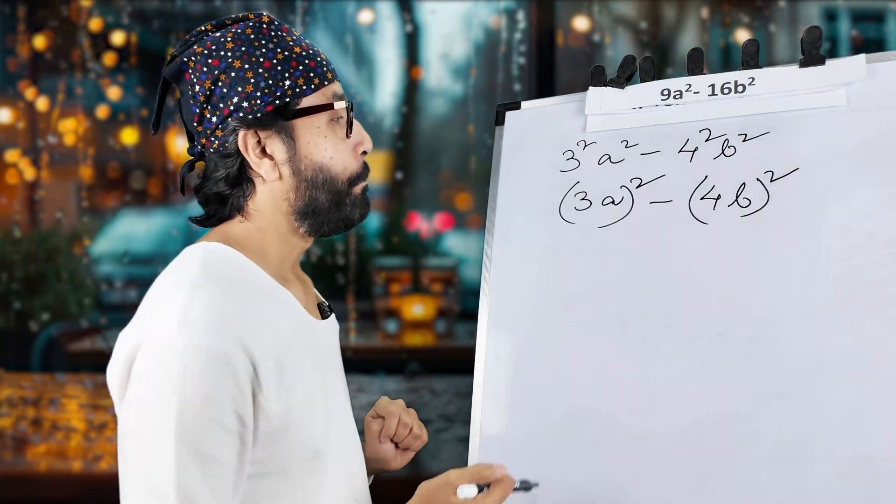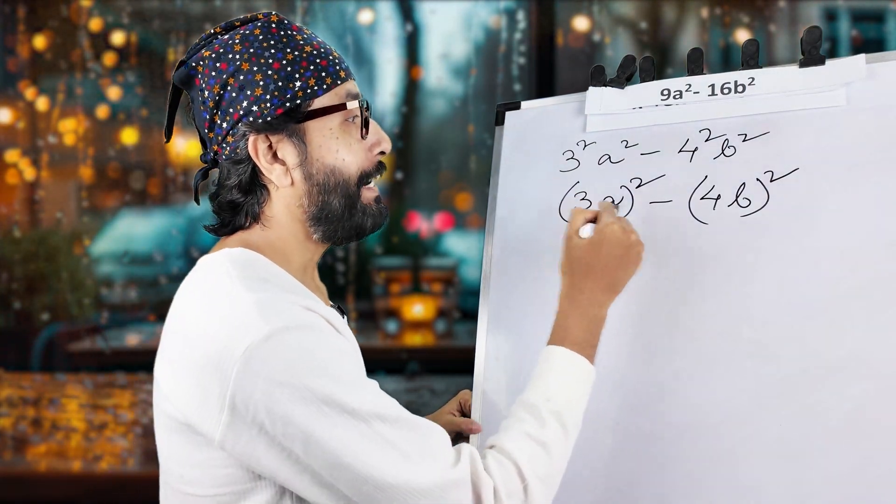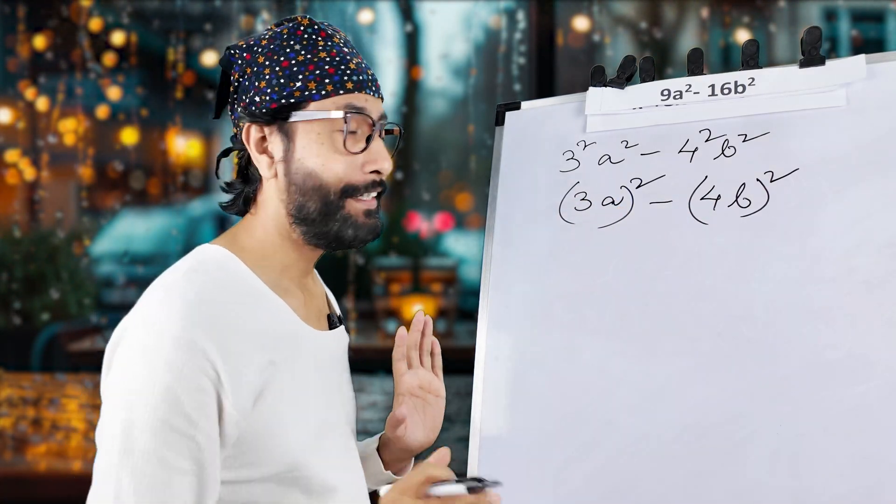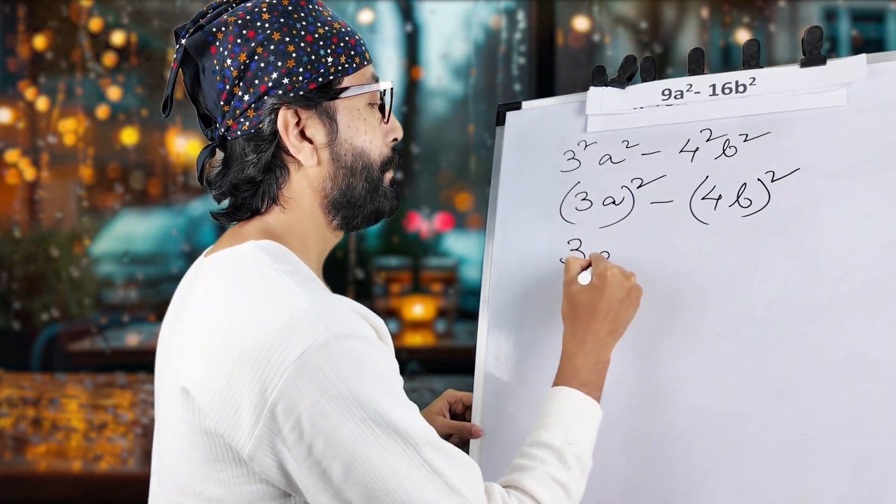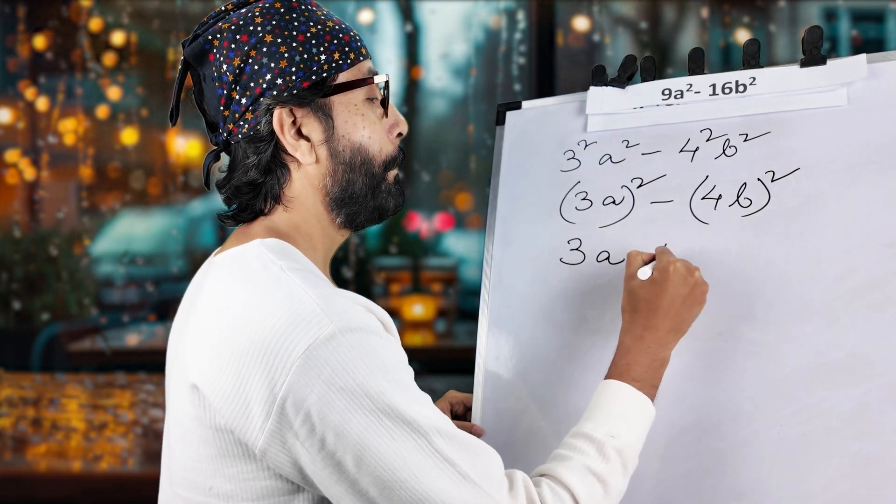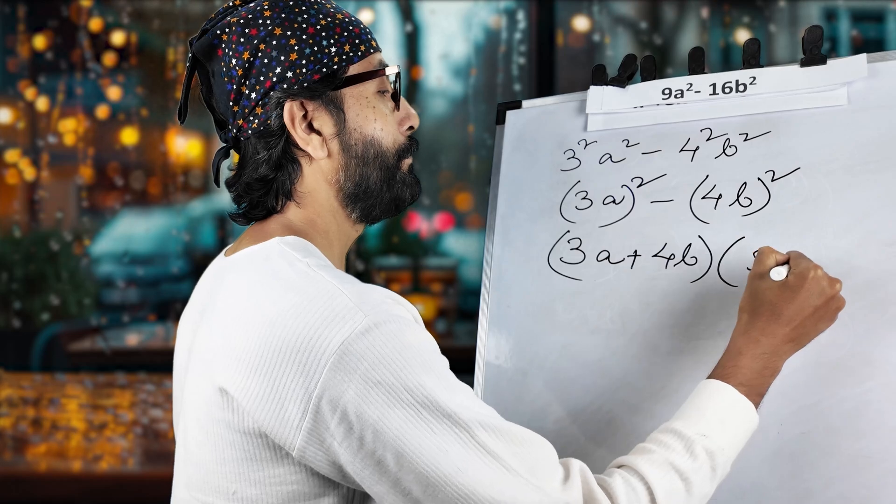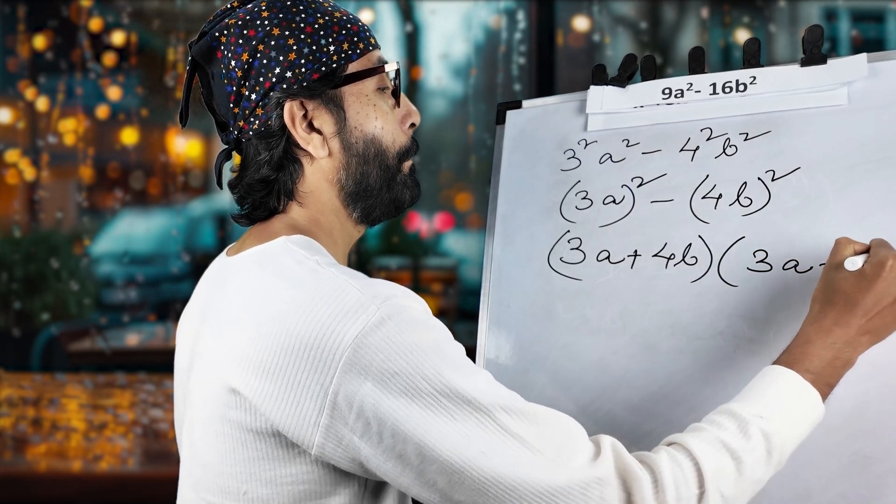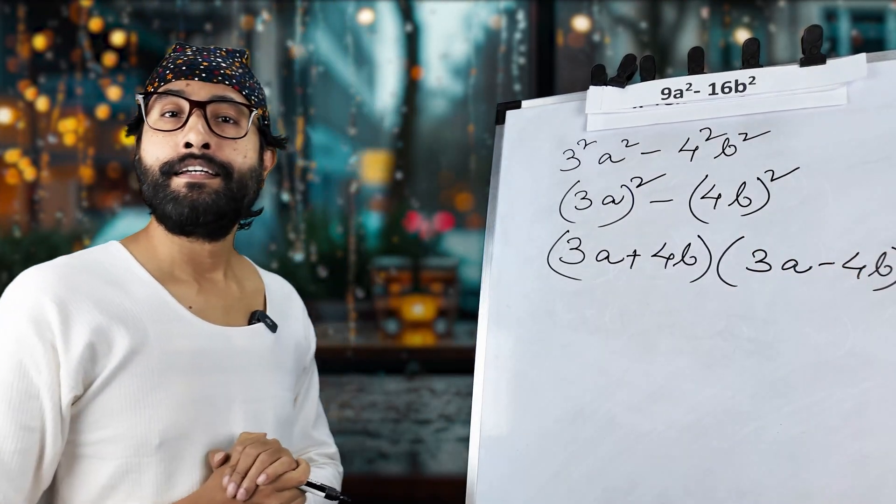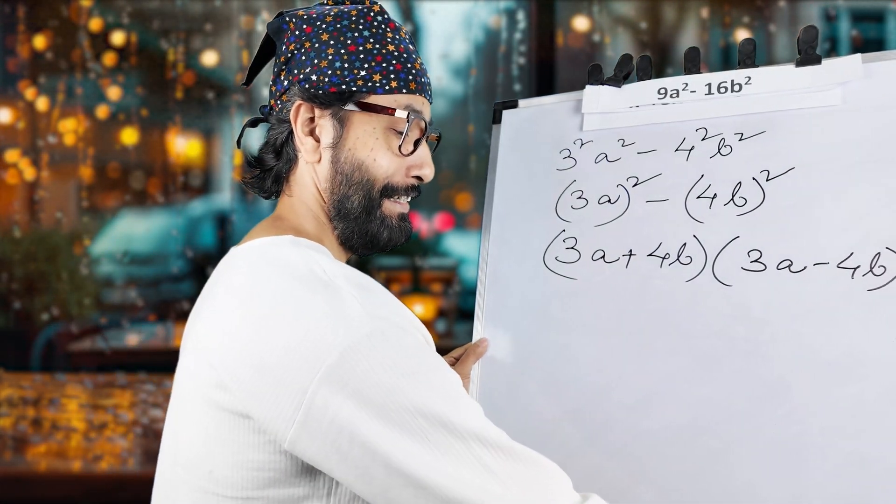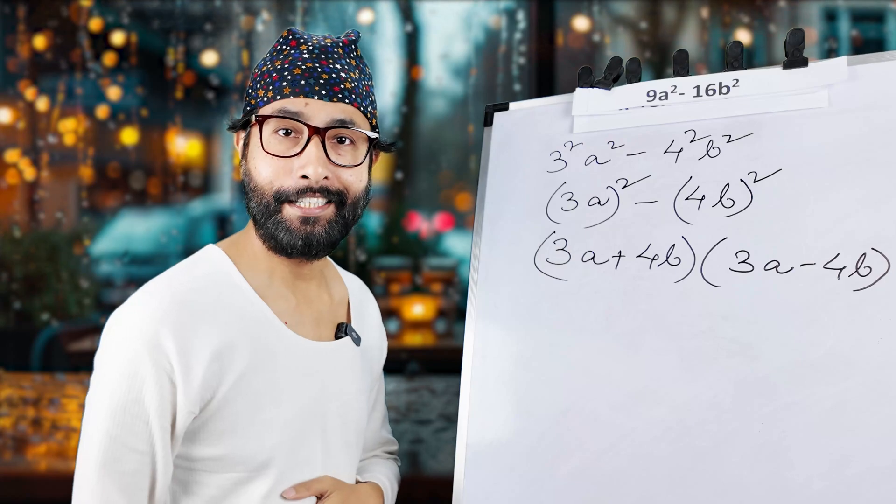Make sense? Now, my friend, this is x square and this is y square. So, this is x plus y. The formula, simple, straight. This is 3a plus 4b and 3a minus 4b. As simple as that. Can you see it now?